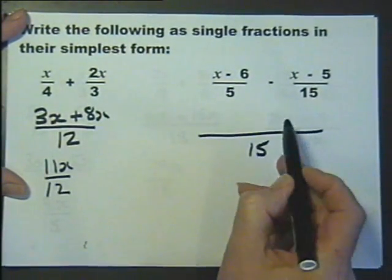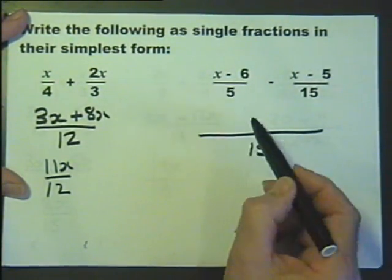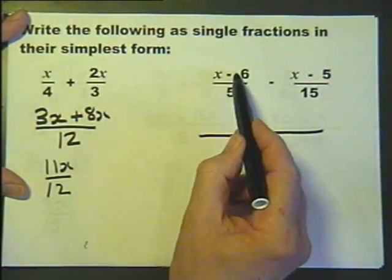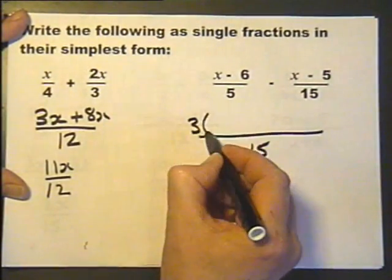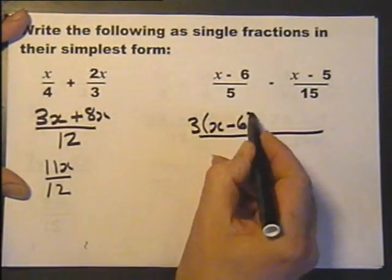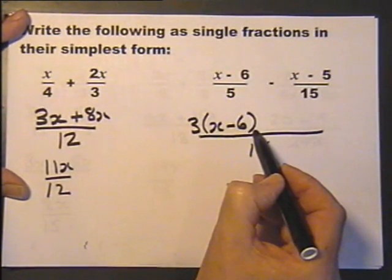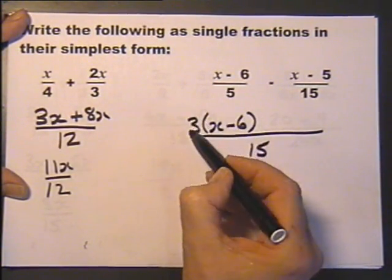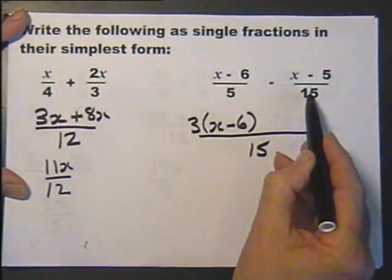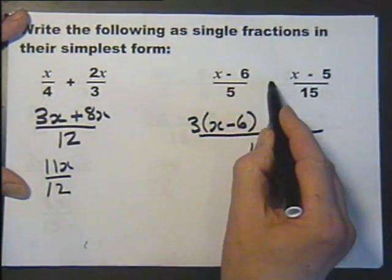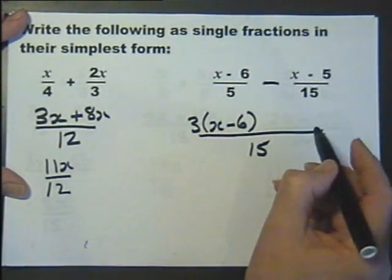Common denominator is 15. 3 times 5 is 15. I've got to multiply that by 3. Now you can, in fact, work that out straight away, but I'm going to set it out by showing my working out. 15 into 15 goes 1. Always be extra careful with minuses.